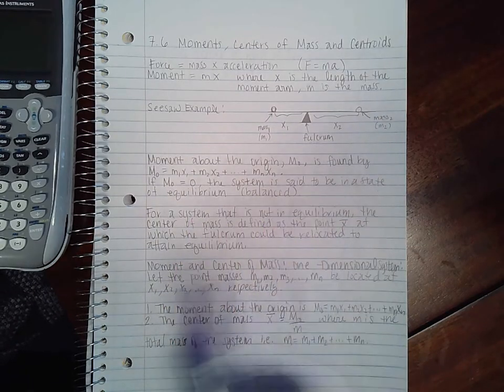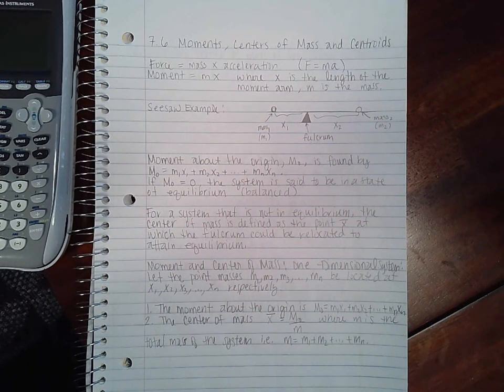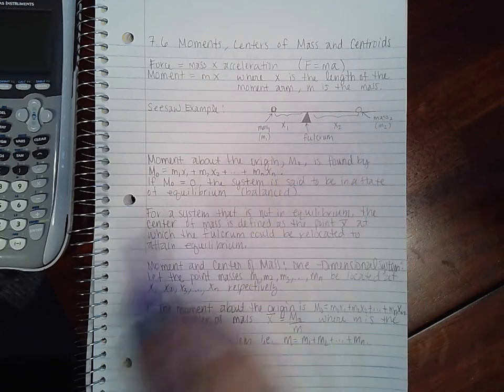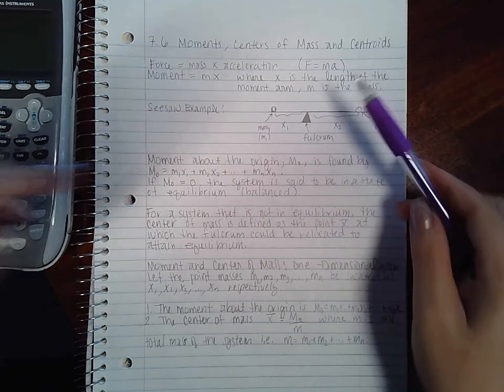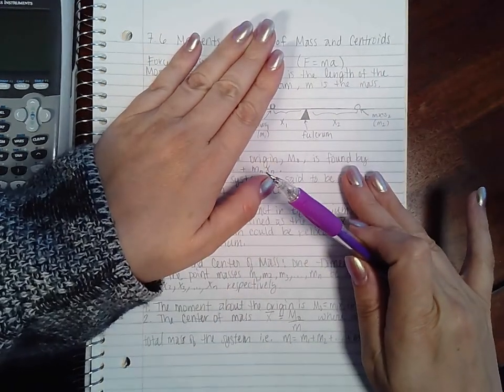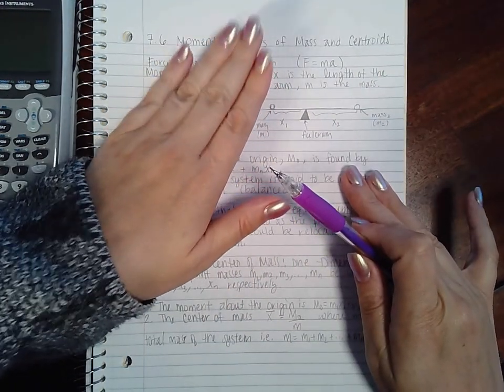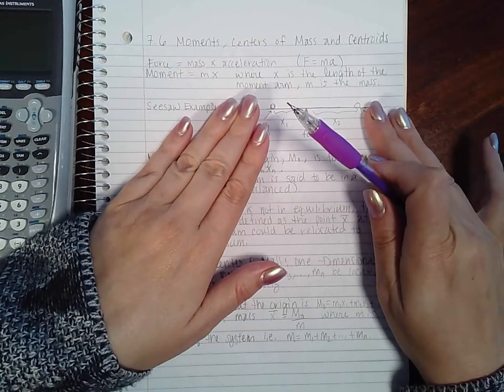If m sub zero equals zero, the system is said to be in a state of equilibrium or balance, like on a seesaw. Even though this person is further out, if this person is heavier it might make it balanced.